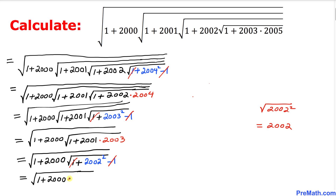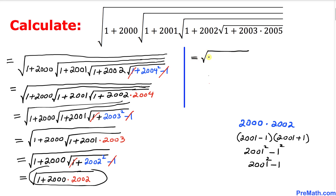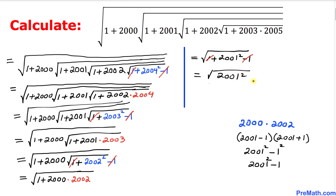Now let's focus on the final innermost part: 2000 times 2002. After repeating all the same steps, we get 2001 squared minus 1. So the square root becomes square root of 1 plus 2001² minus 1, and the negative one and positive one cancel, leaving square root of 2001 squared. The square and square root cancel, giving us simply 2001.